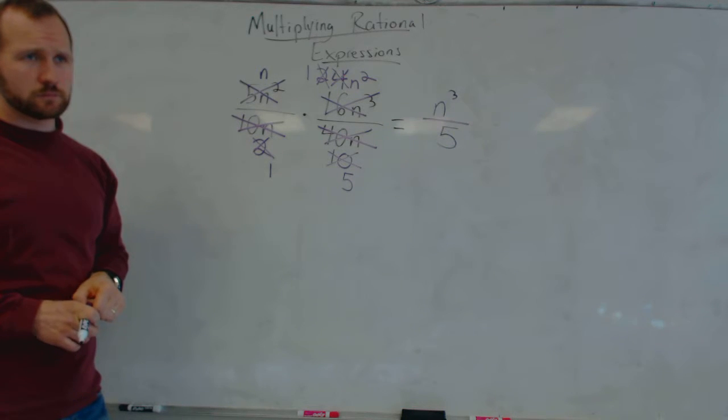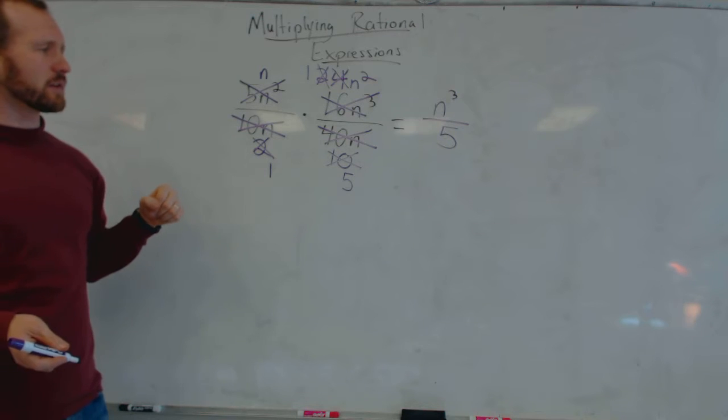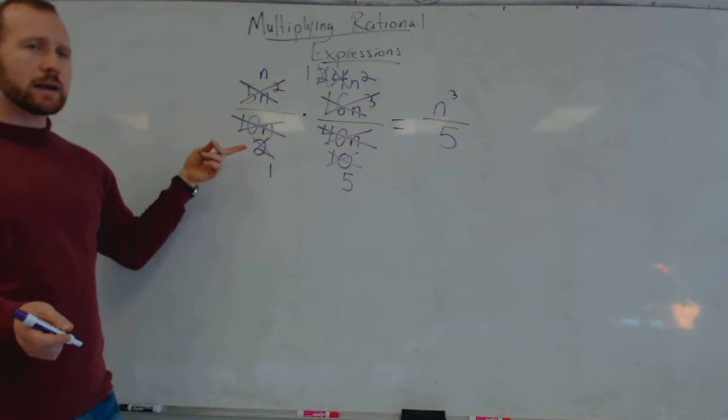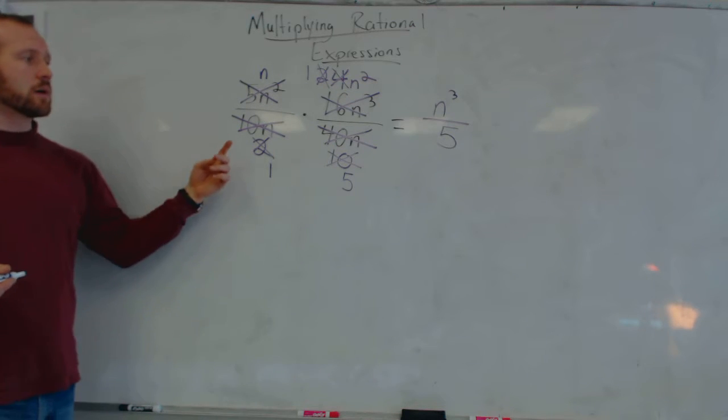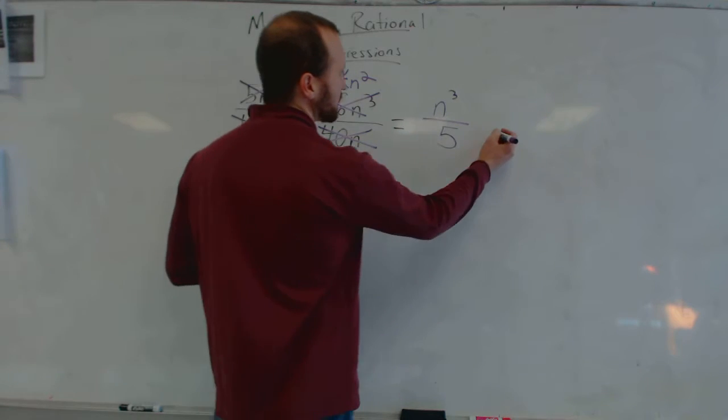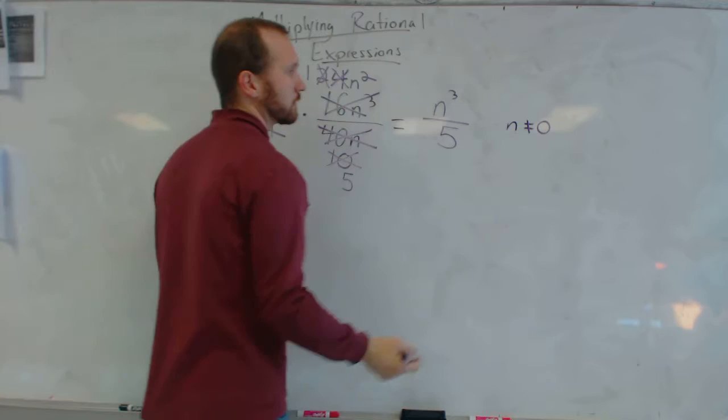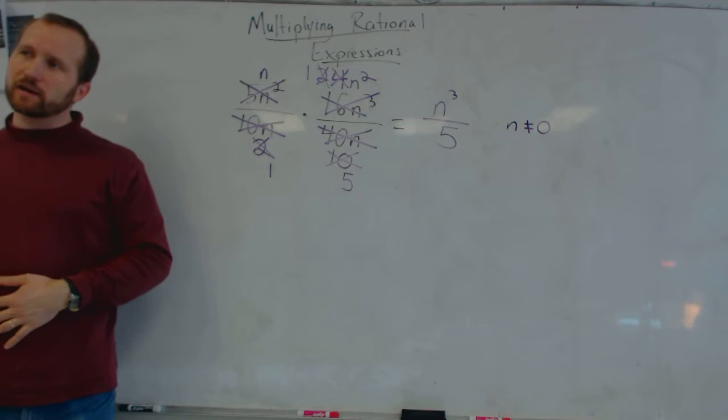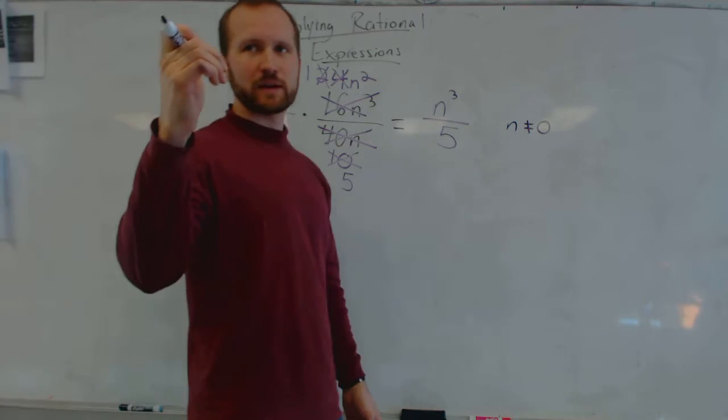Could you put if n equals 5, then like 1? Oh, so if we were going to do excluded values for this, what can n not equal? 0. We have to look back at our original denominators. Yeah. We can't have a denominator of 0, so n cannot equal 0. Why can't we have a denominator of 0? Because friends don't let friends divide by 0. And Bella, I'm your friend, so... Just think of Gary's shirt. Exactly.